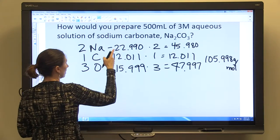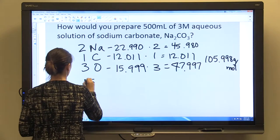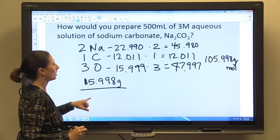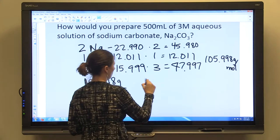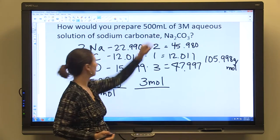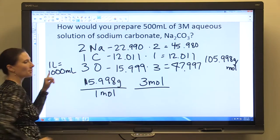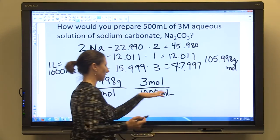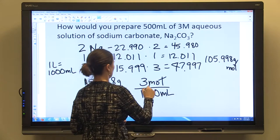So we need 500 milliliters of a three molar aqueous solution. We know we have 105.998 grams in one mole. We need three moles per one liter. But since we're going to be dealing with milliliters, and we know that one liter equals 1,000 milliliters, I'm just going to go ahead and put that in our equation here to replace one liter with 1,000 milliliters.